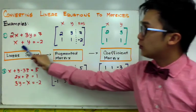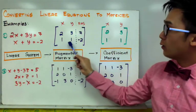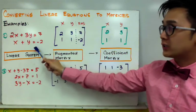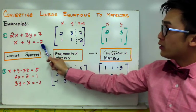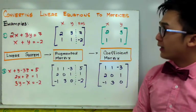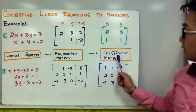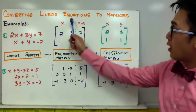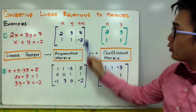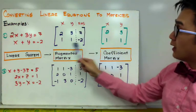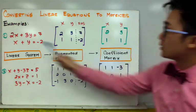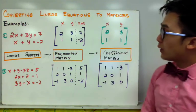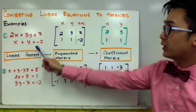The second row of the augmented matrix is 1, 1, negative 2, corresponding to x plus y equals negative 2. We also have the coefficient matrix, which is the augmented matrix with the right-hand side dropped, giving us 2, 3, 1, 1. So we have two conversions for this linear system: the augmented matrix and the coefficient matrix.